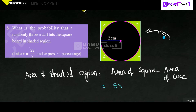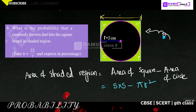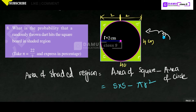Area of square will be equal to side into side. Then, area of circle will be pi r squared. What is the radius here? Radius will be equal to 2 cm. What is the side? The side — from here to there — the circle exactly fits, so this side is 2 and this is also 2, making the total side 4 cm. So the side is 4 cm.